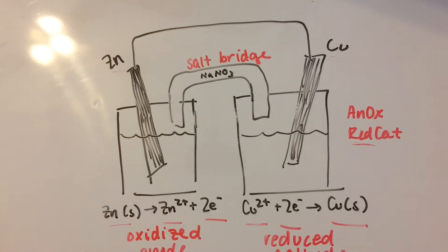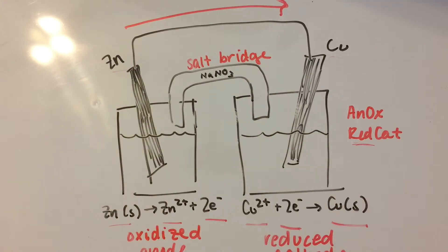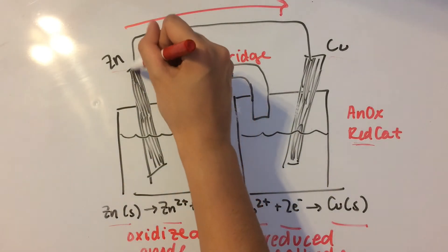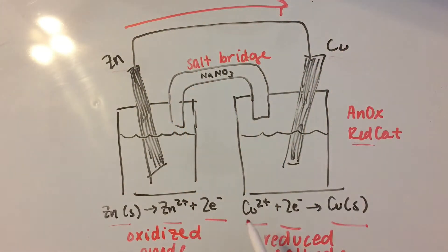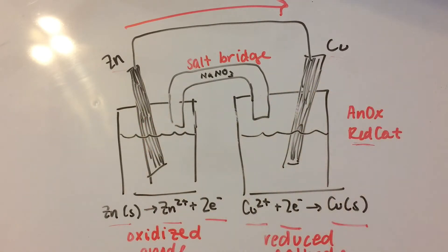So, the current, or the way that electrons are going to be flowing, is this way, from the zinc to the copper. Because oxidation is when you're losing electrons, reduction is when you're gaining electrons. So the electrons are going to be flowing this way through the metal wire because zinc is losing them and copper is gaining them.